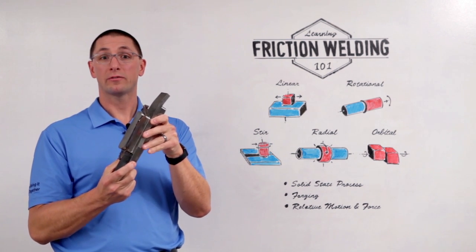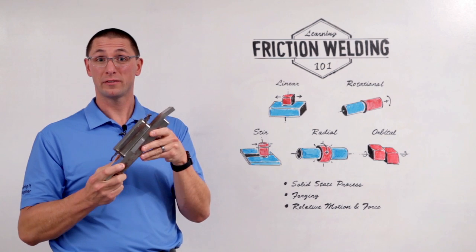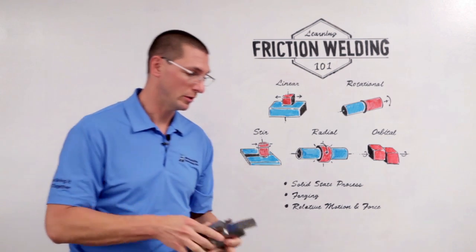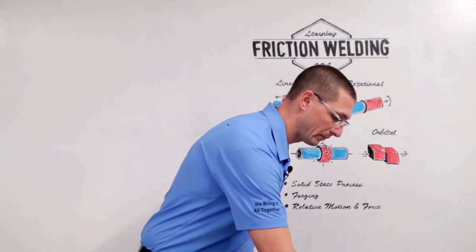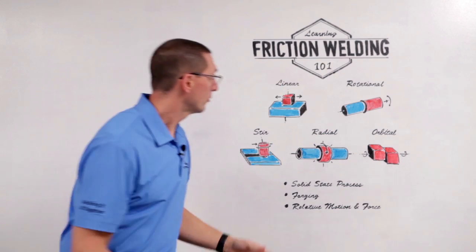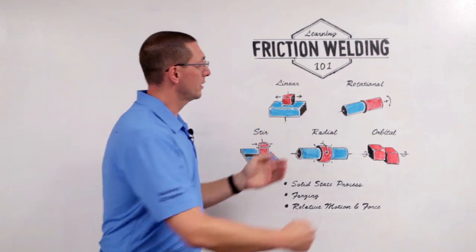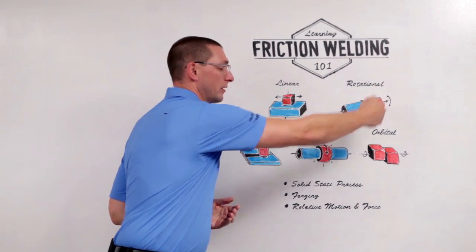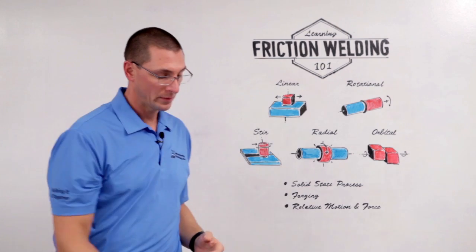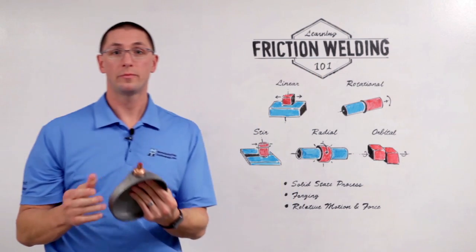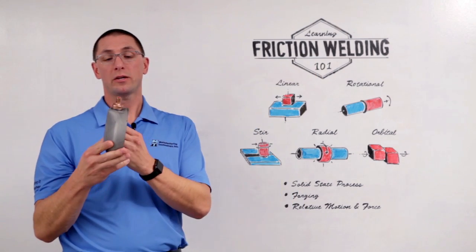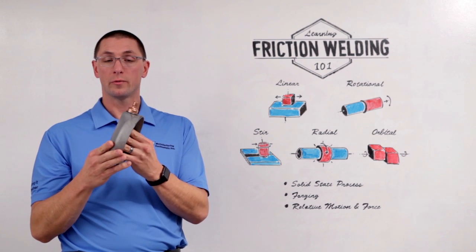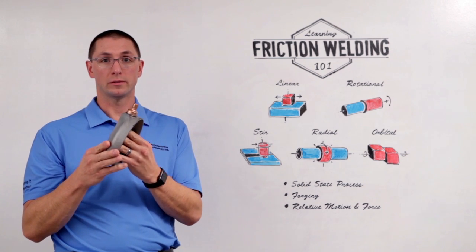This allows me to have something that is relatively complex and still be able to create a friction weld with it. With rotary friction welding, I have one piece that's stationary and a second piece that's rotating. Only one of the two pieces needs to be symmetric around its rotating axis in order to make this weld.